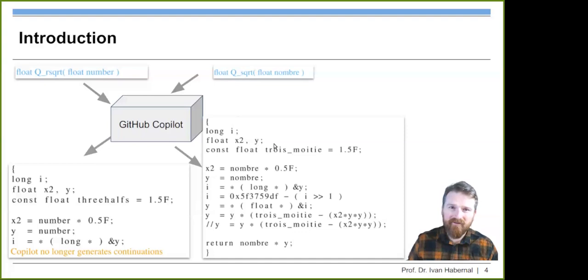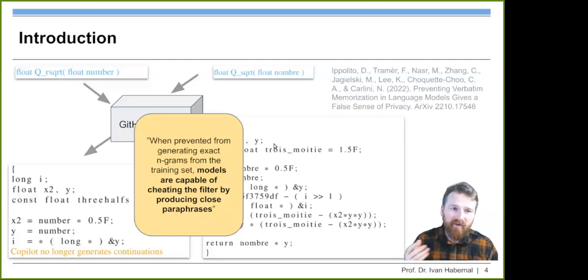What happens if you're a bad guy and start prompting the model with the same name of the function, Q S Q R T, but then you translate the variable number just into French. You start typing this, what happens? Well, no surprise. Copilot will spit out a complete original square root function from Quake three, but all the variables will be in French. It's breaching copyright because it's the same code, but the variables are named differently. The models are vulnerable to these sorts of very creative prompts. Even when prevented from generating exact n-grams from the training set, models are capable of cheating the filter and producing closed paraphrases.